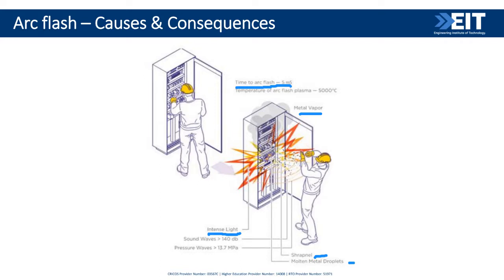Recent studies have found that the major hazard to persons associated with arc flash events is actually the plasma that's ejected from the arc, as opposed to the electricity itself — in comparison to what was focused on before, which was the fault itself.